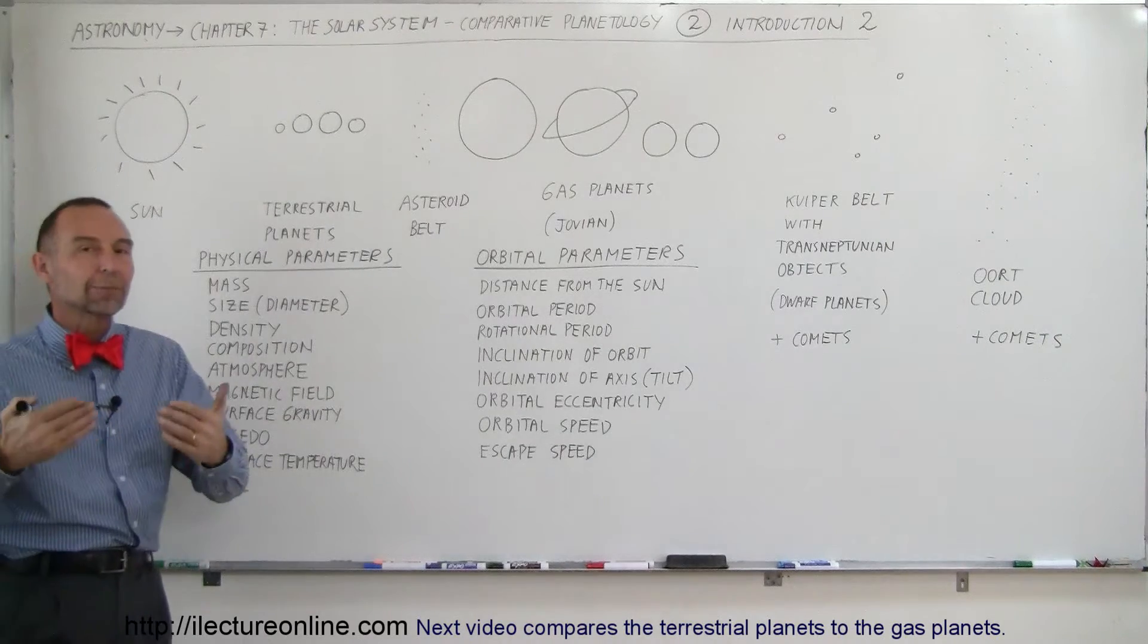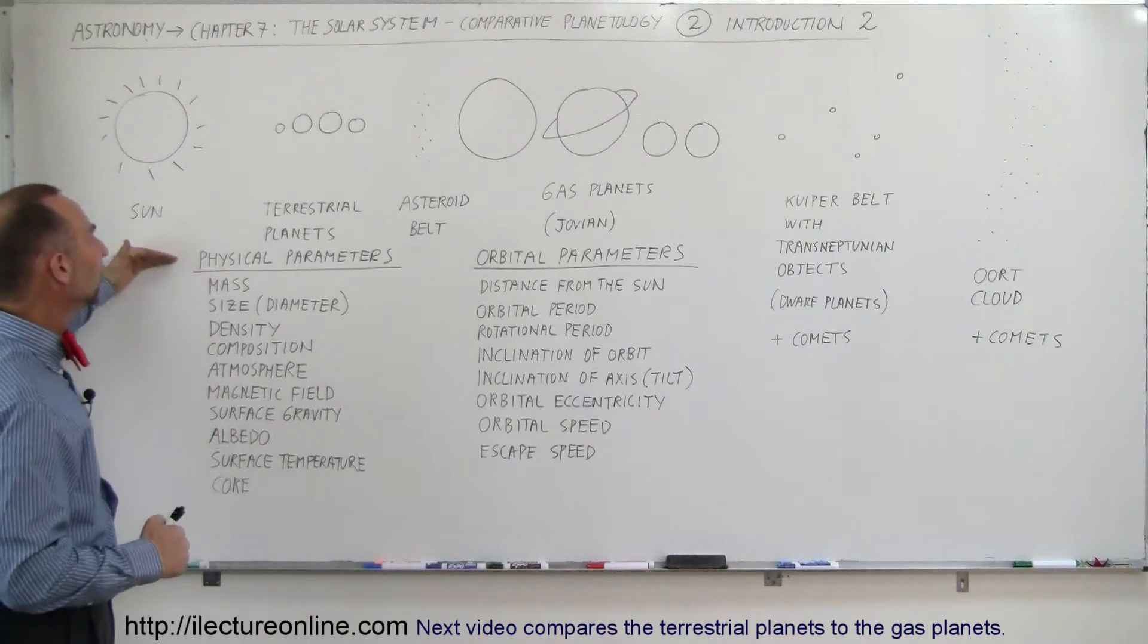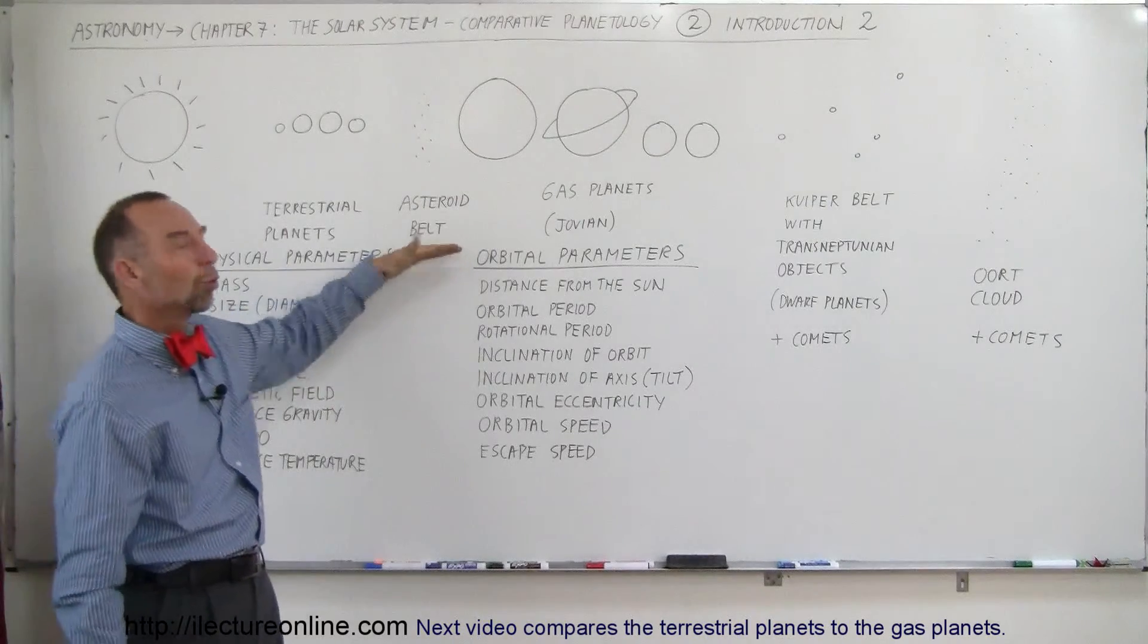So we're going to do what we call comparative planetology and there are what we call physical parameters and there are what we call orbital parameters.